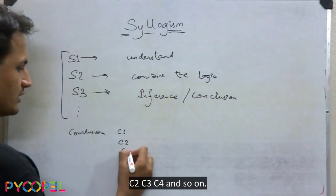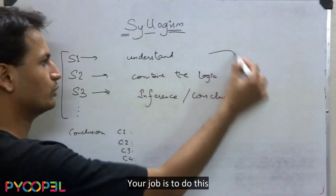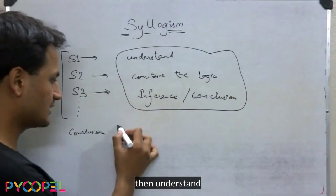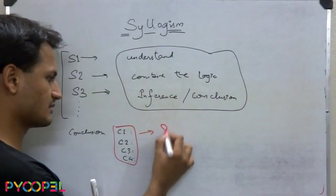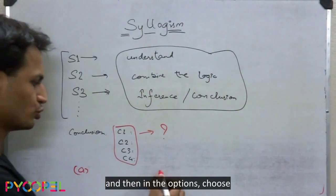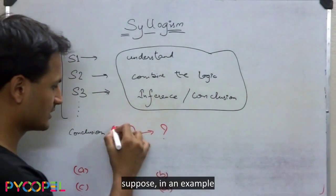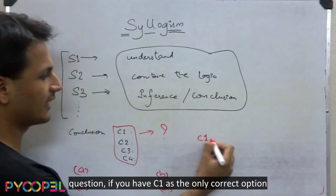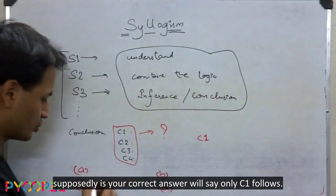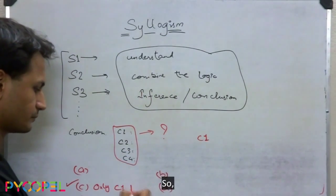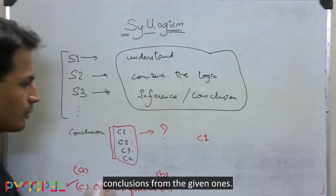For example, C1, C2, C3, C4 and so on. Your job is to understand which of these conclusions are correct. Then in the options, choose the correct one. For example, if C1 is the only correct conclusion, then the correct option should say 'only C1 follows.' So we have to choose the option which talks about only the correct conclusions from the given ones.